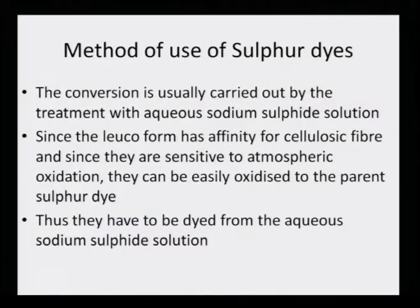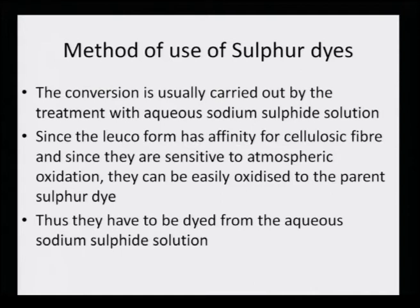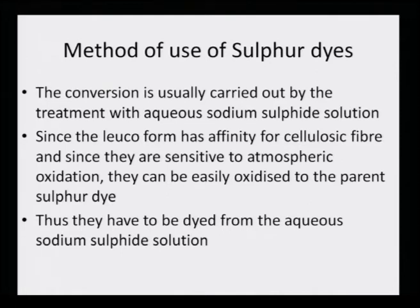Sulphur dyes must be dyed from aqueous sodium sulfide solution — this is a mandatory chemical when sulphur dyes are used for dyeing. They are very similar to vat dyes such as indigoid dyes: the dye is in insoluble form, is solubilized to leuco form, and then re-oxidized on the surface of the fabric. This is the chronology of events and there is a great deal of similarity between these two dye classes.